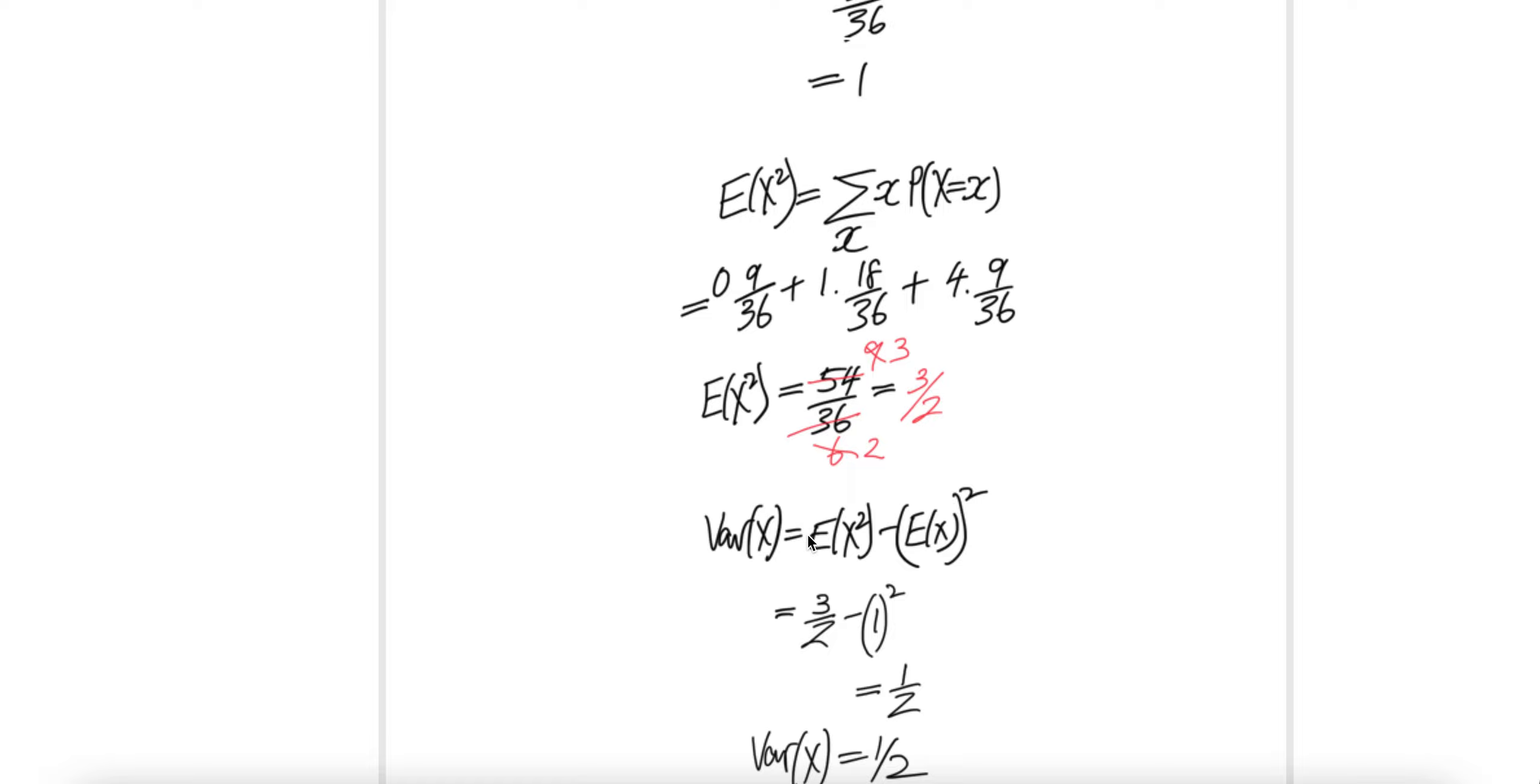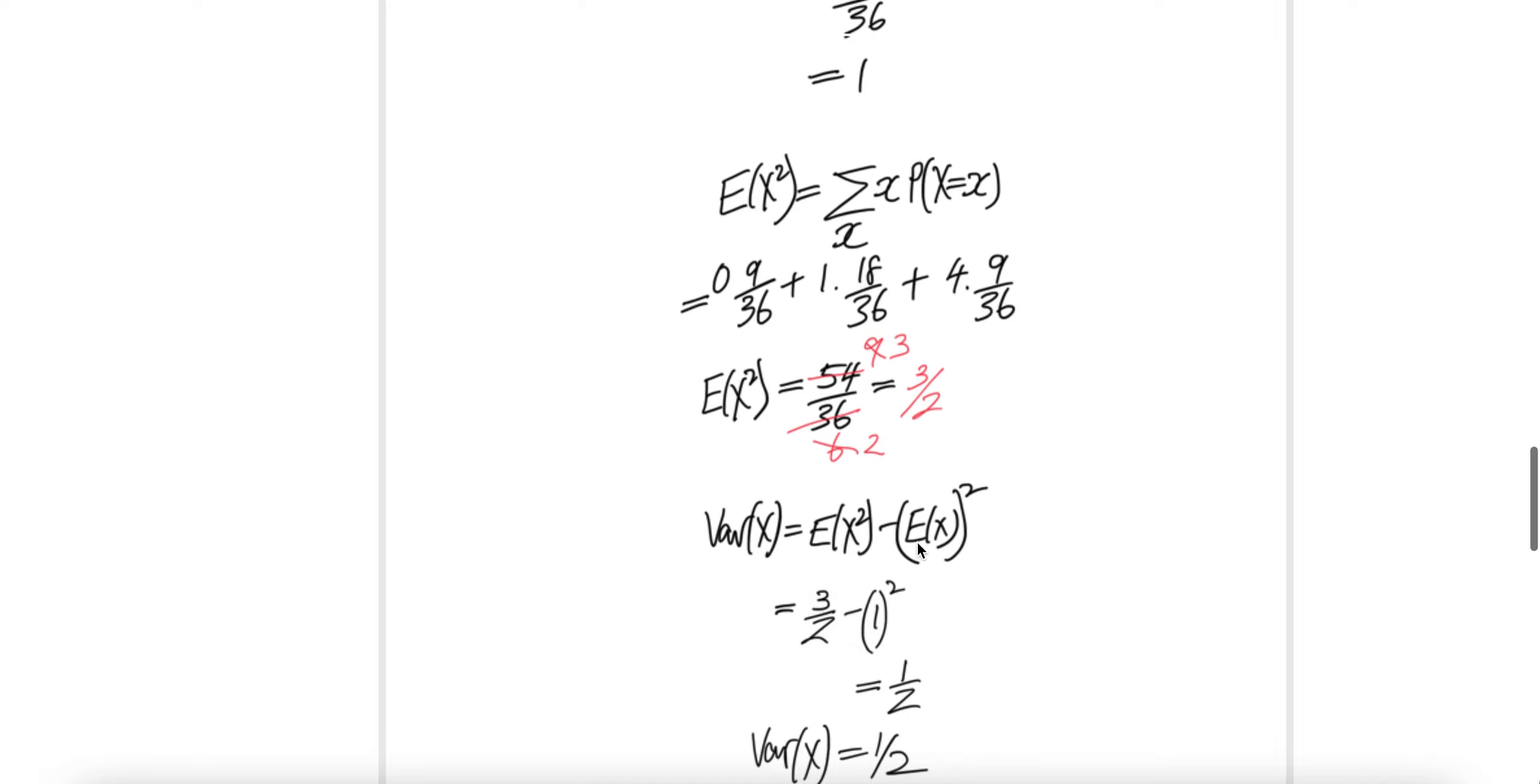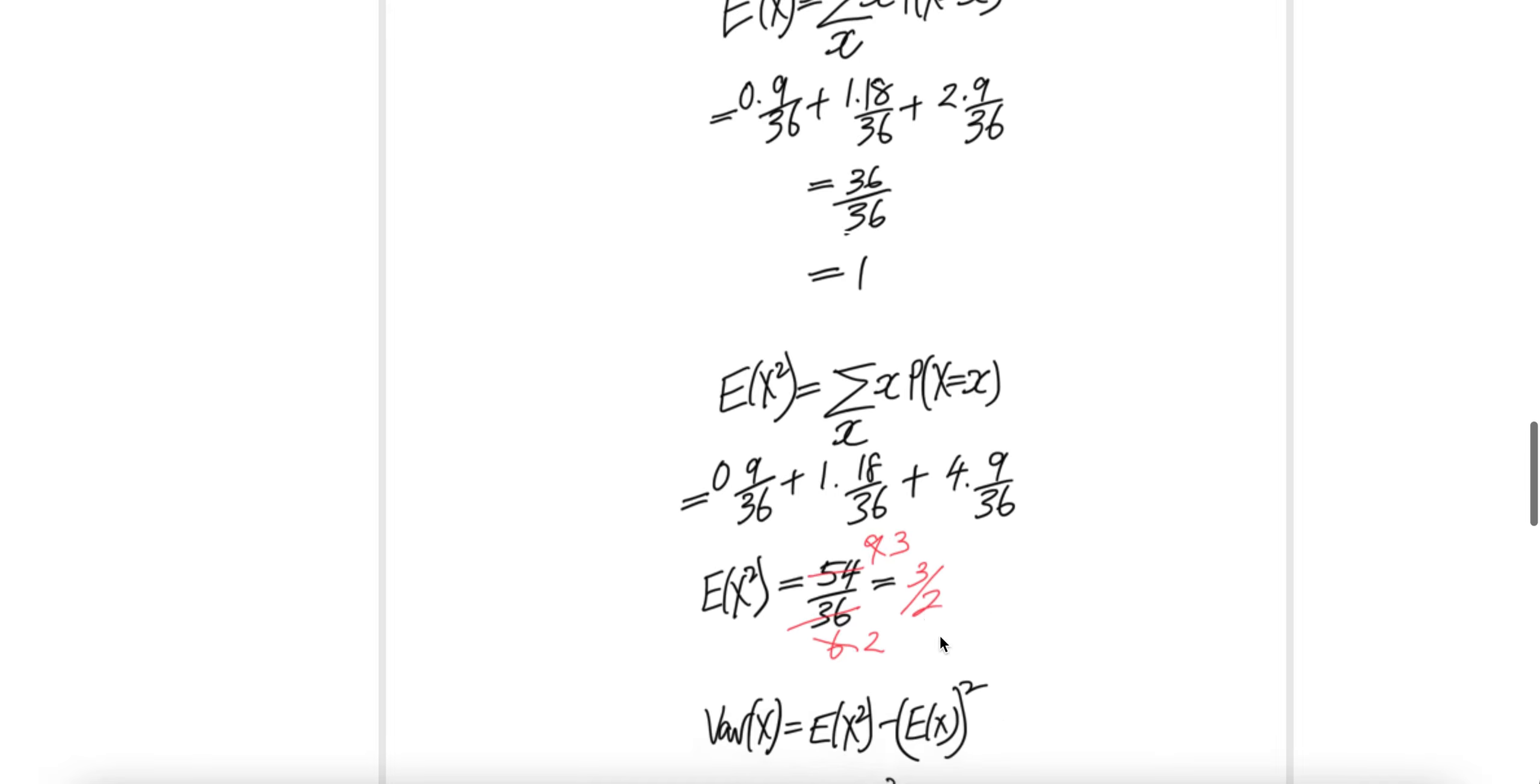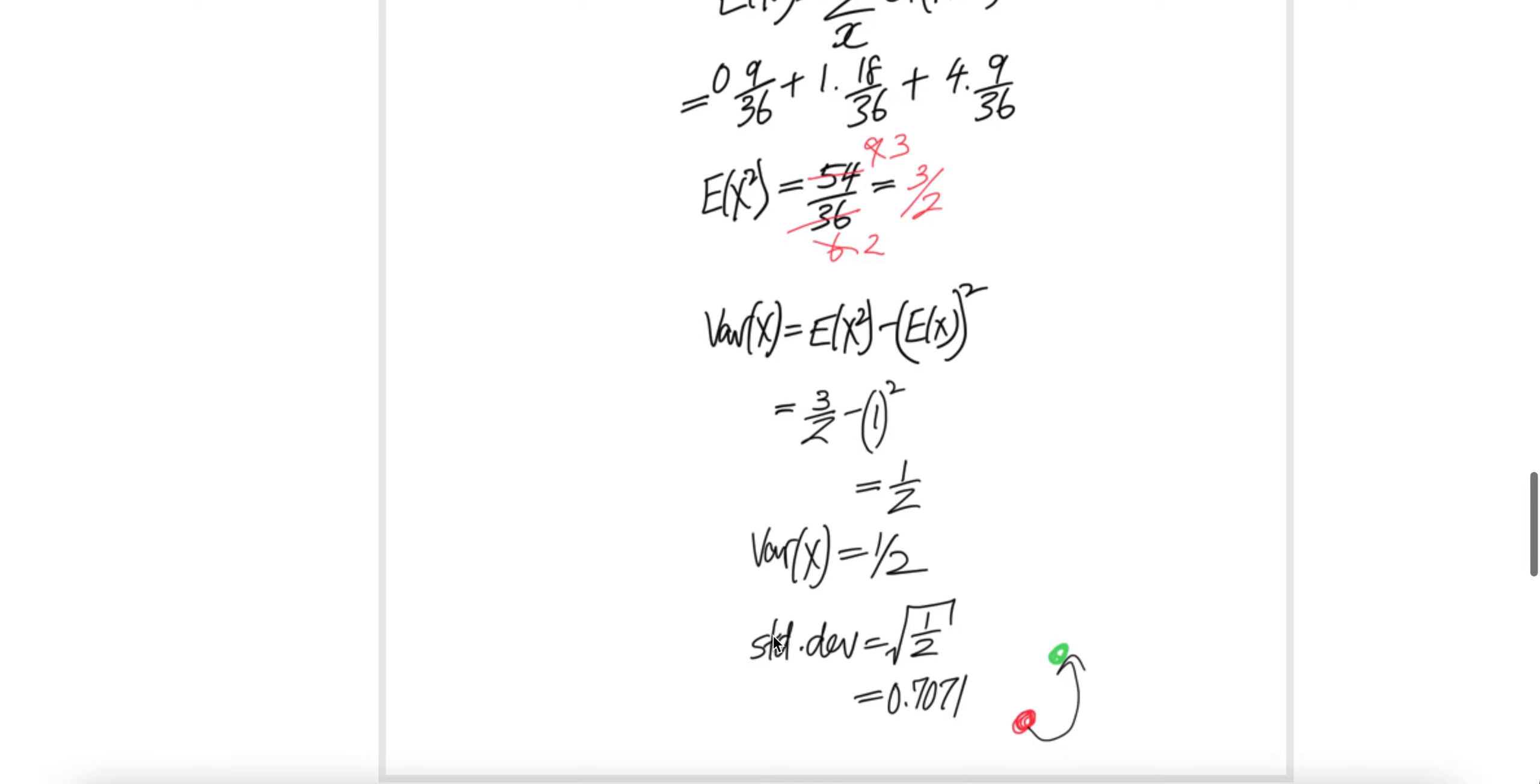The variance of X is equal to expectation of X squared minus expectation of X whole squared. This piece is here at three over two minus expectation of X is one. And then you know how to do this simple math. Variance is half. Standard deviation will be square root of the variance of X, which is square root of half, which is 0.7071. Done.